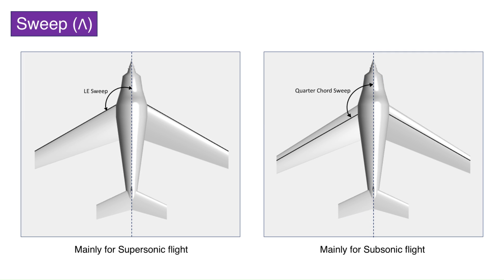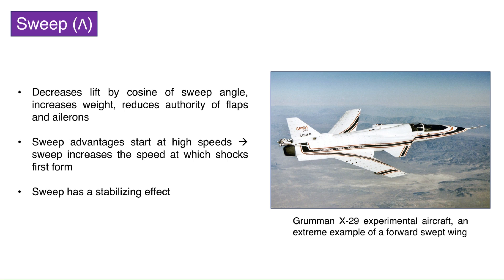There are two important sweep angles. The leading edge sweep is important for supersonic flight. In order to reduce drag, the wing is commonly swept in such a way that the leading edge is behind the Mach cone. This is not always true, as too large a sweep is impractical from a structural standpoint. The second sweep angle is that which is measured with reference to the quarter-chord line. This sweep angle is mostly related to subsonic flight. Forward sweep can also be used to get the aerodynamic benefits at high speeds, but in this case, there is a problem of divergence. Divergence can cause the wing to twist uncontrollably and even break off.